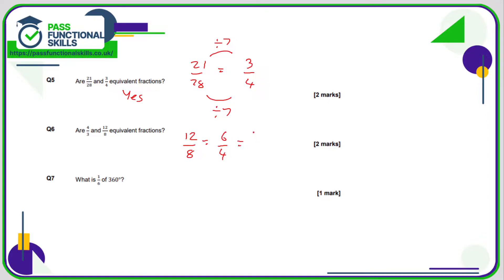We still got even numbers, so we can simplify it again to three over two. So four over three is that the same as three over two? No, they're completely different fractions, so no they're not equivalent fractions.